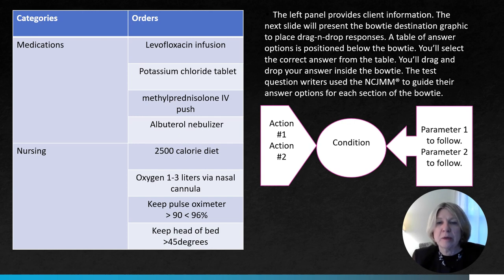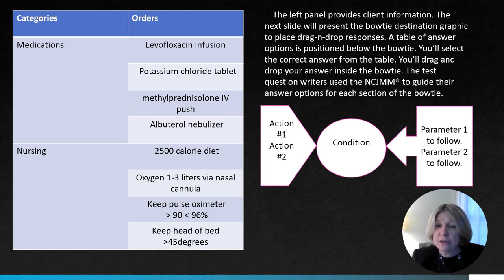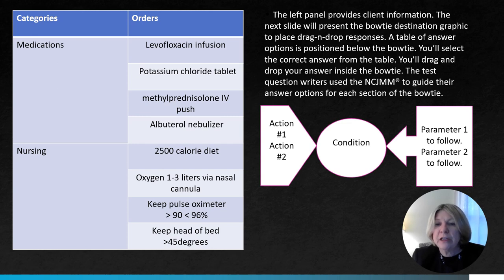The left panel provides the client information, and the next slide presents the bow tie destination graphic where you place the drag and drop responses. A table of answer options is positioned below the bow tie on the national exam screen. The test question writers use the NCSBN's clinical judgment measurement model, which is why we go through recognizing cues and analyzing cues to guide the answer options for each section of the bow tie.